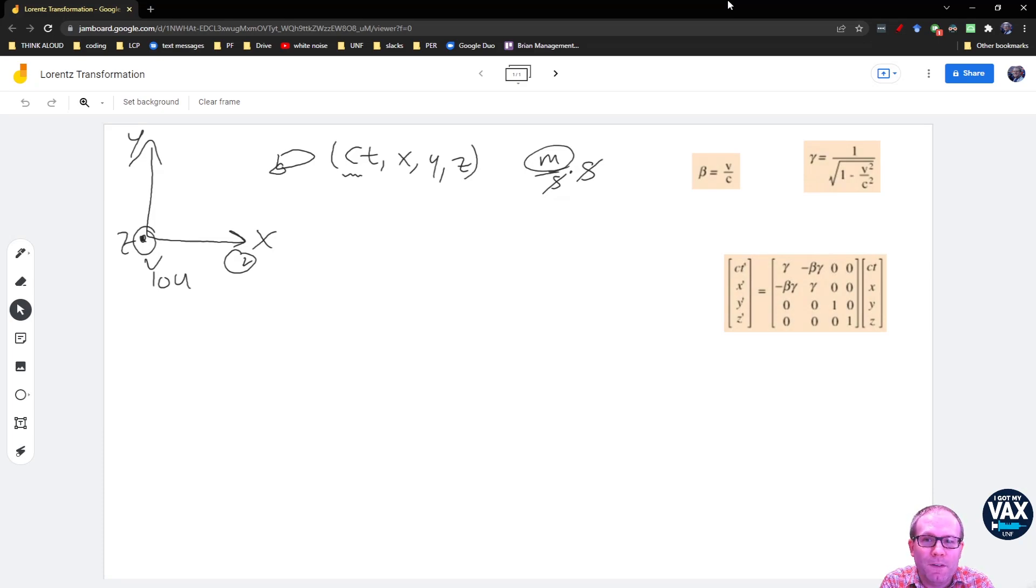We call this thing a four vector. There's different notations for it. We're just going to stick with writing it either as a row vector or a column vector depending on the application. The question that comes in is if that's what you're observing, if you're observing c, t, x, y, and z, what does somebody else observe when they look at the same spaceship?